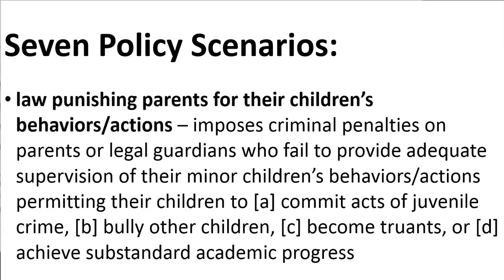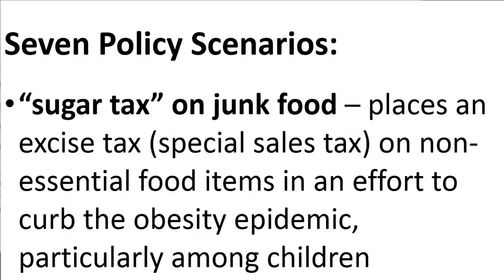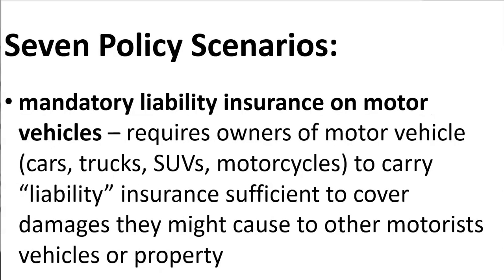Five: Law punishing parents for their children's behavior and actions — imposes criminal penalties on parents or legal guardians who fail to provide adequate supervision for their minor children's behaviors and actions, permitting their children to: A) commit acts of juvenile crime, B) bully other children, C) become truants, or D) achieve substandard academic progress. Six: Sugar tax on junk food — places an excise tax, a special sales tax, on non-essential food items in an effort to curb the obesity epidemic, particularly among children. Seven: Mandatory liability insurance on motor vehicles — requires owners of motor vehicles — cars, trucks, SUVs, motorcycles — to carry liability insurance sufficient to cover damages they might cause to other motorists, vehicles, or property.